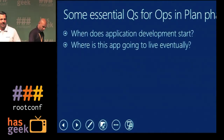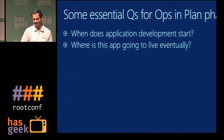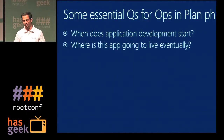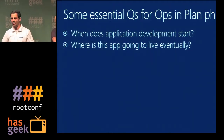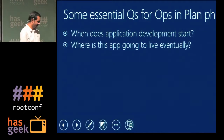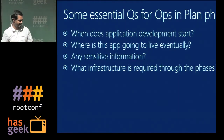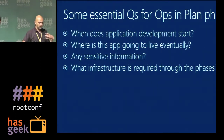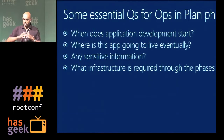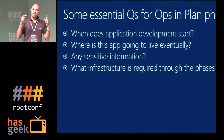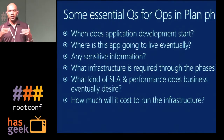Some of the things we keep in mind when going through the entire DevOps process: when does application development start? Where is this app going to live eventually? In each phase, will it change environments? These are questions we ask more from the ops side during planning. That's exactly why we say it is very important for the ops team to get into the process early on in the development cycle. Areas where you'd want to think about production environments: sensitive information, secure communication, what kind of ports to open on the server. These conversations are important to have upfront, rather than once you're ready and good to go, because by then you're probably too late.